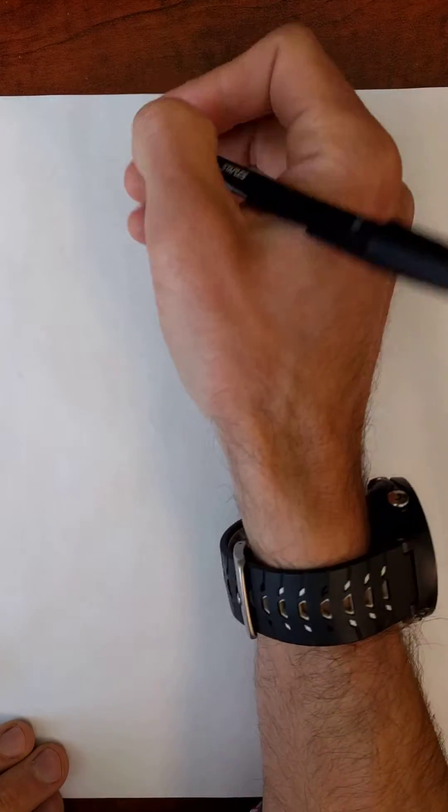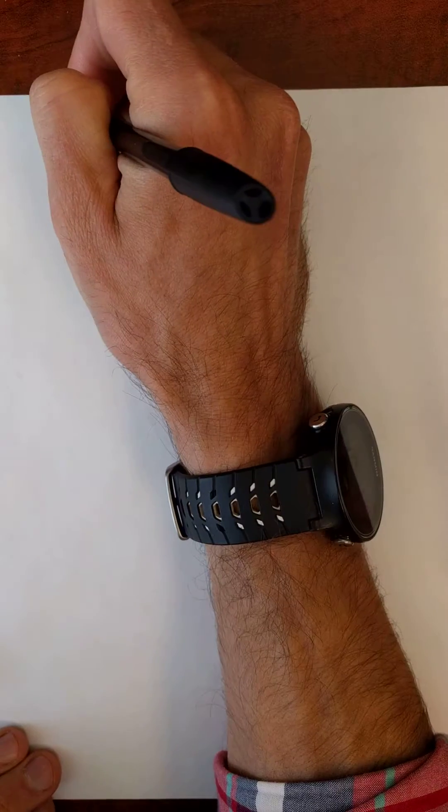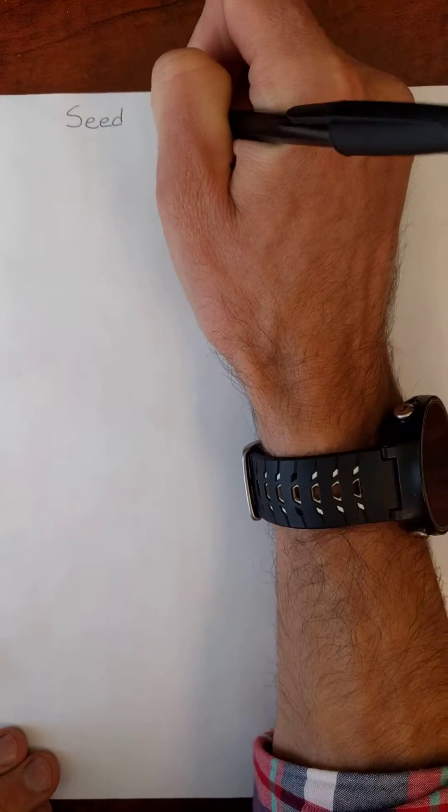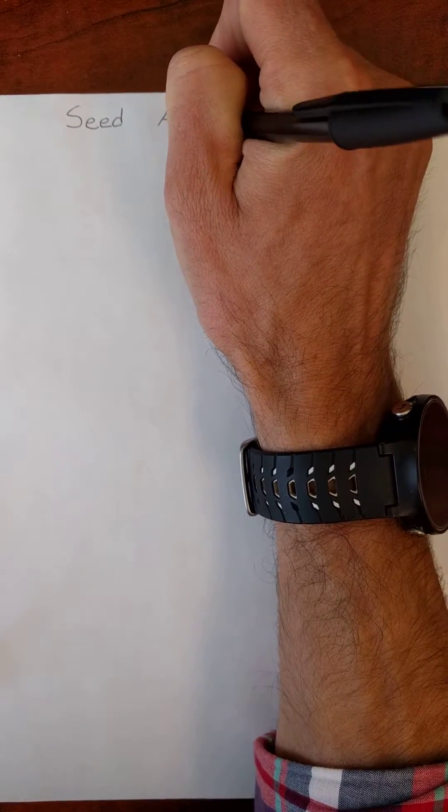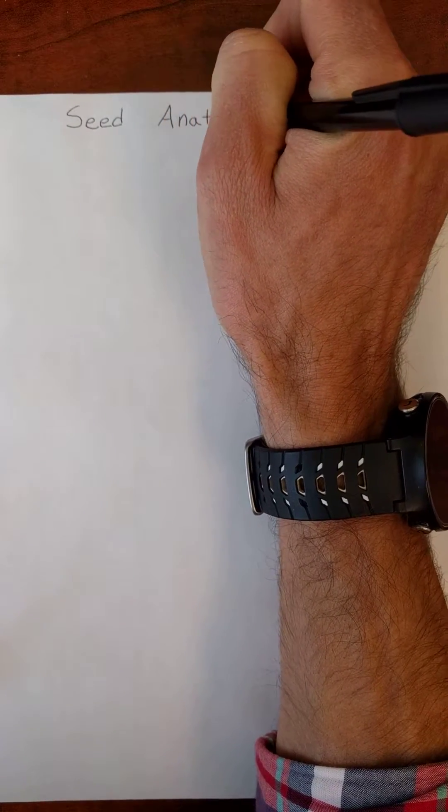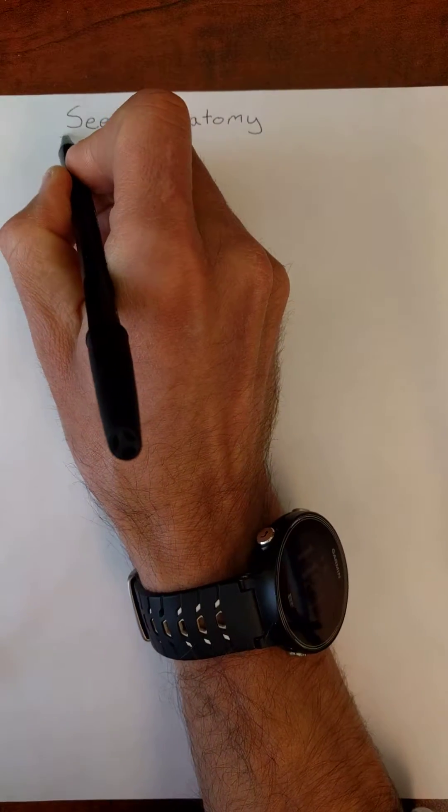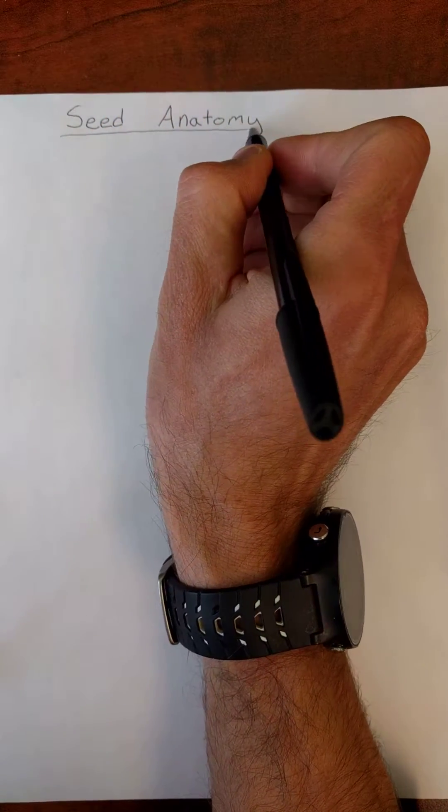Hello everyone, welcome to my quick tutorial on seed anatomy. In doing seed anatomy, we'll talk about the three major parts of the seed. You need to know their names and their functions, and in doing so, we're going to look at two of the major classes of plants. They actually get their name from the anatomical features that are different between the two.